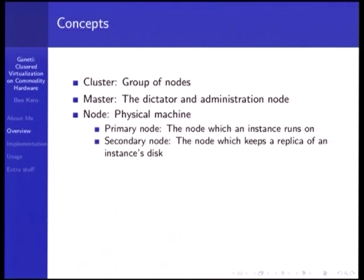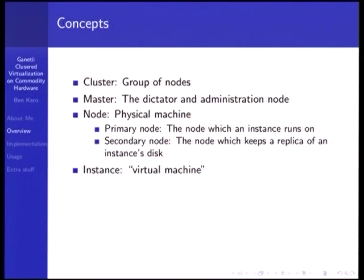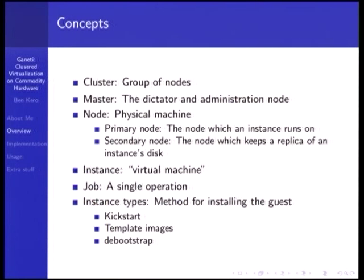A node is a physical machine — like a 1U server that's part of your cluster. Ganeti has the concepts of primary and secondary nodes: the primary is the node the virtual machine runs on, and the secondary is where you're replicating the disks in case of primary failure. An instance is just a virtual machine. A job is a single operation — all jobs submitted to Ganeti run through a standard job queue. There's also an instance type: you can kickstart, deploy with a template image tarball, or use debootstrap or rpmstrap.